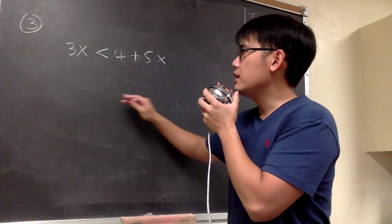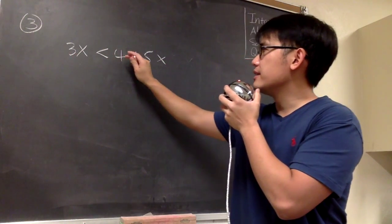For number 3, we are going to solve this inequality. Here we have 3x less than 4 plus 5x.